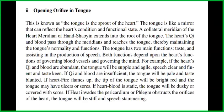Number two: opening orifice in the tongue. This is known as 'the tongue is a sprout of the heart.' The tongue is like a mirror that can reflect the heart's condition and functional state. A collateral meridian of the heart meridian of Hand Shao Yin extends to the root of the tongue. The heart's Qi and blood pass through the meridians and reach the tongue, thereby maintaining the tongue's normality and functions. The tongue has two main functions: taste and assisting in the production of speech.